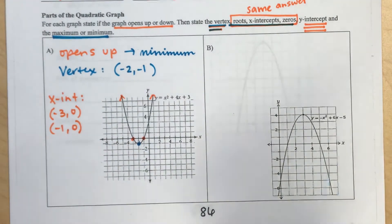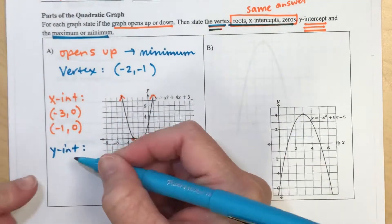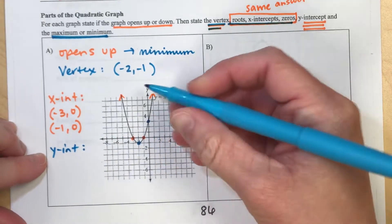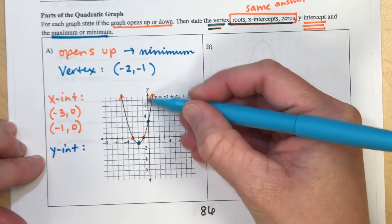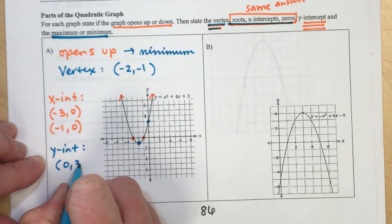And then last, our y-intercept, because that actually is part of your quadratic equation. I want to tell you what that is in a future video here, but where it looks like it crosses the y-axis is at 3, so that point would be 0, 3.